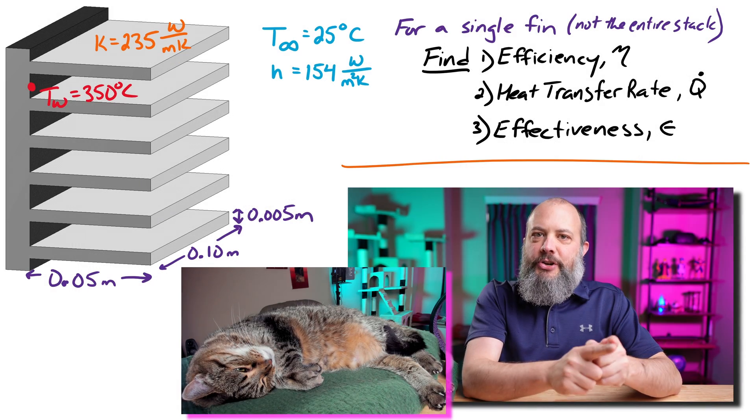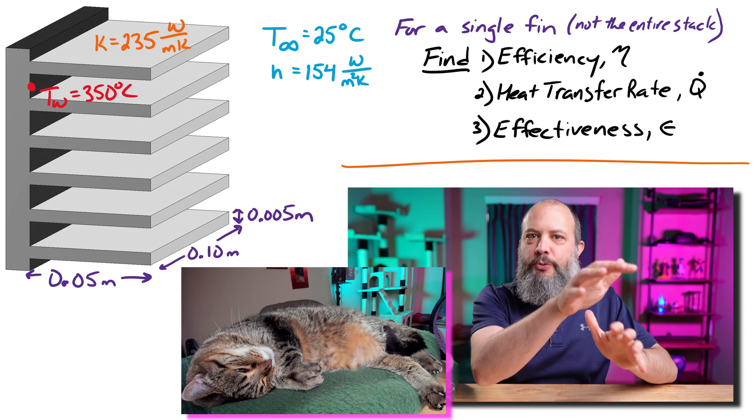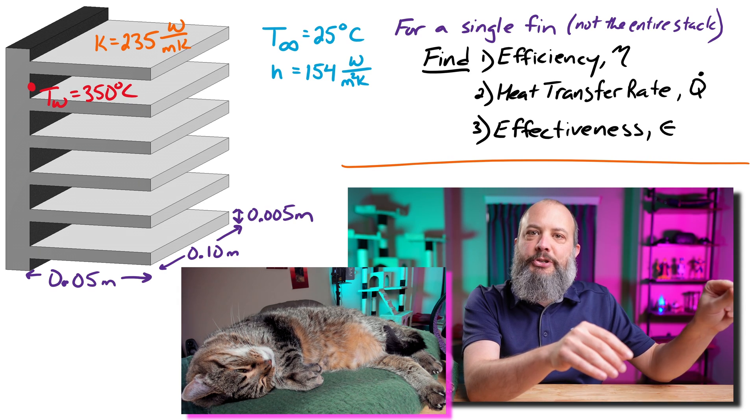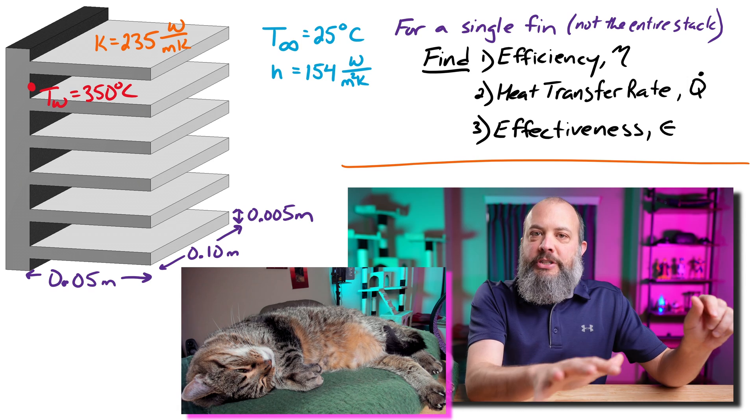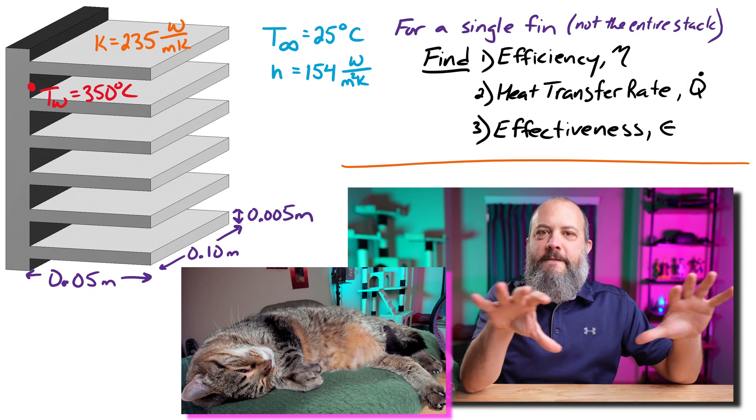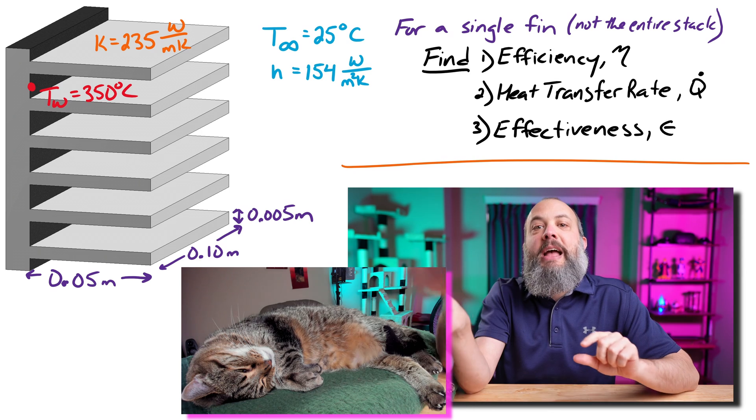And so efficiency is a measure of how much actual heat transfer we get when accounting for this decreased temperature along the length of the fin versus how much heat transfer you get if the entire fin were the same temperature as the wall.